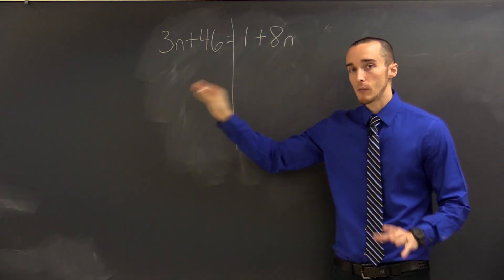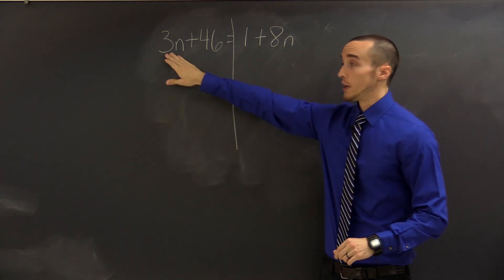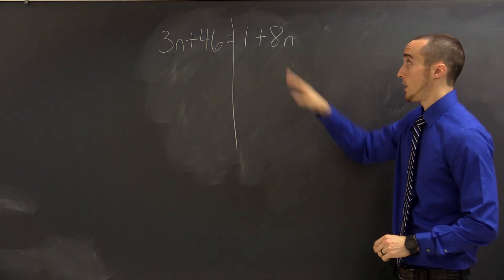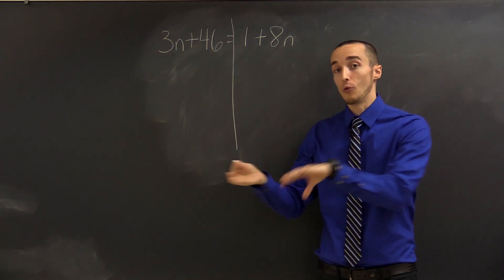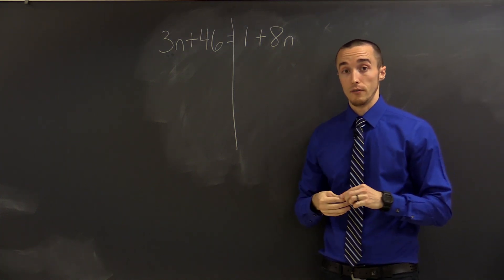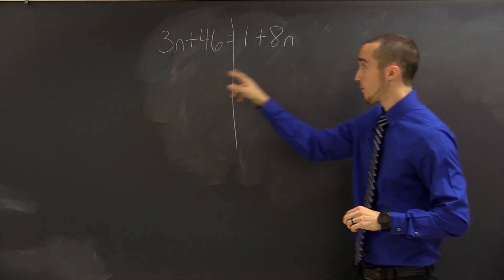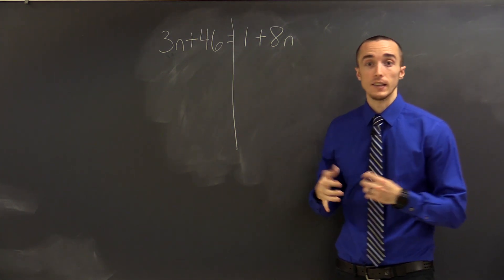Now, as I looked at this problem, I noticed it does have terms with variables on both sides of the equal sign. Over here, we have 3n. On the right, we have 8n. I need to either get them all to go to the left or all to the right. And for me, I go to the side with the bigger coefficient. So we've got a coefficient of 3 and a coefficient of 8. I'm going to go to the right-hand side since 8 is bigger than 3.